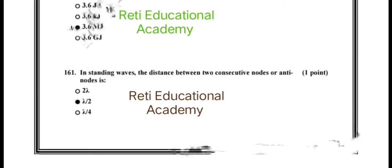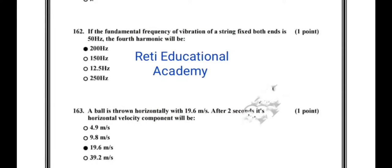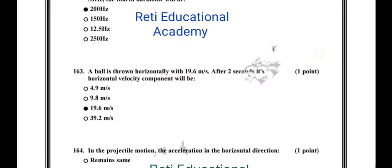Question number 161: in standing waves, the distance between two consecutive nodes — the correct option is B. Question number 162: if the fundamental frequency of vibration of a string fixed at both ends is 50 Hz, the fourth harmonic will be 200 Hz; A is the correct option.